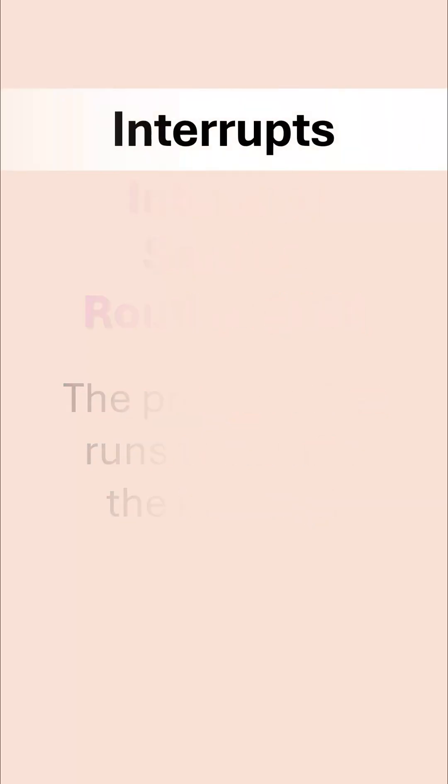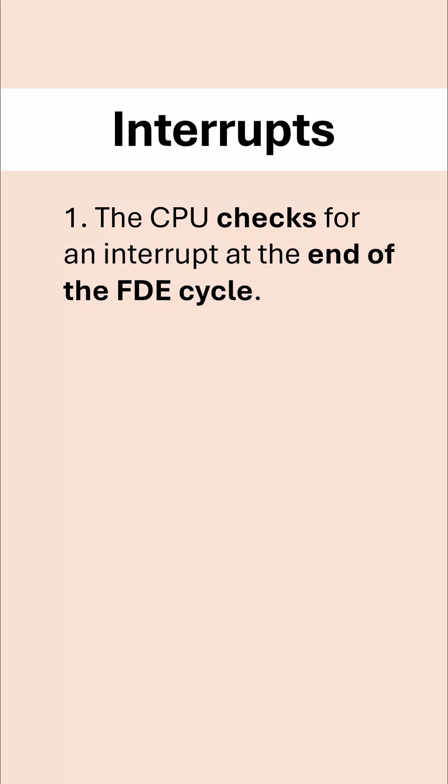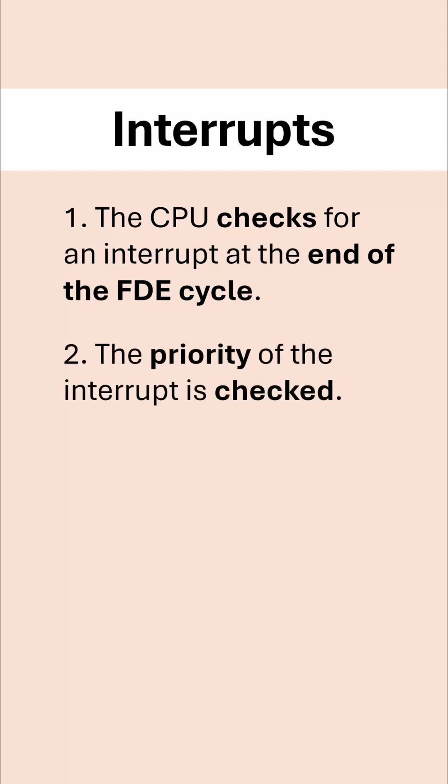You'll need to be able to describe the steps involved in handling an interrupt. First of all, the CPU checks for an interrupt at the end of an FDE cycle. If there is an interrupt, it then checks the priority of this interrupt, and will only proceed if the interrupt's priority is higher than the current task's priority.